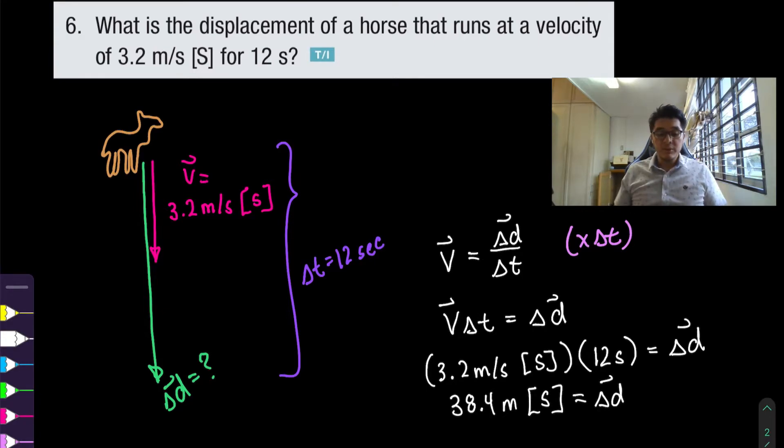So here the tricky part was working with vector quantities. Now if you didn't want to keep carrying the brackets with the square brackets you could have used a convention where instead of south you could have written that as a negative number. And that would have still given you the same answer because then at the end you would have got a negative 38.4 and since negative is south you could have made that final replacement.